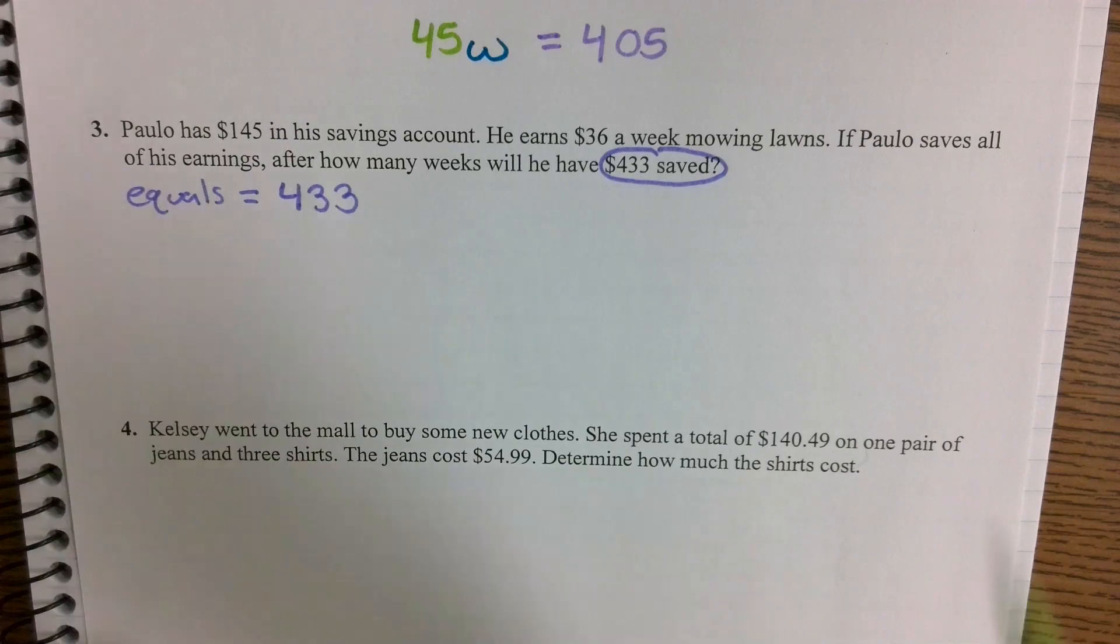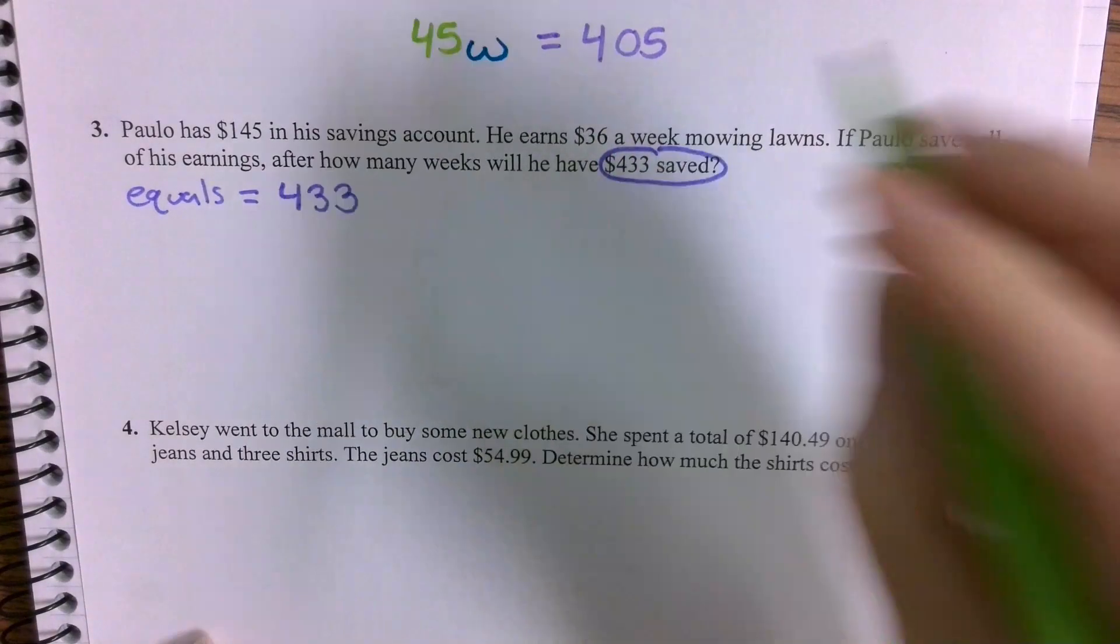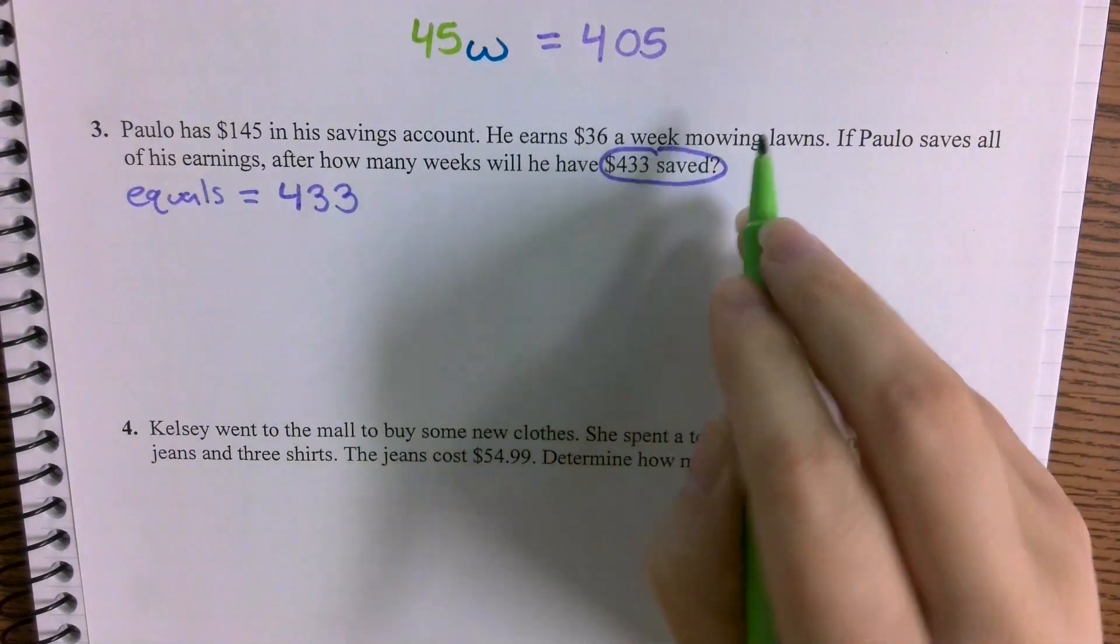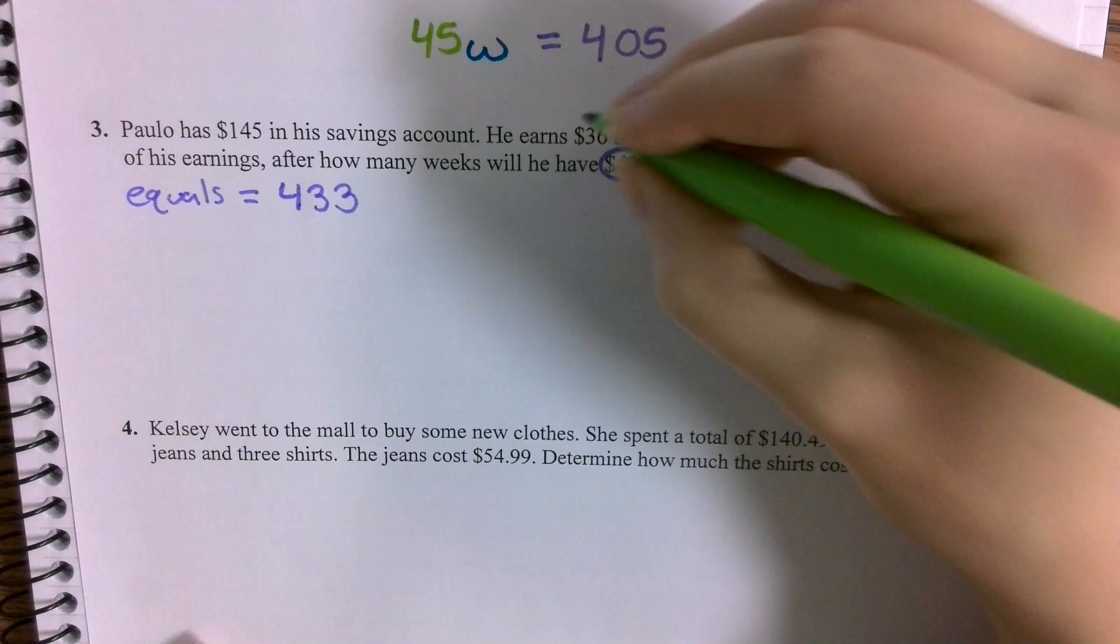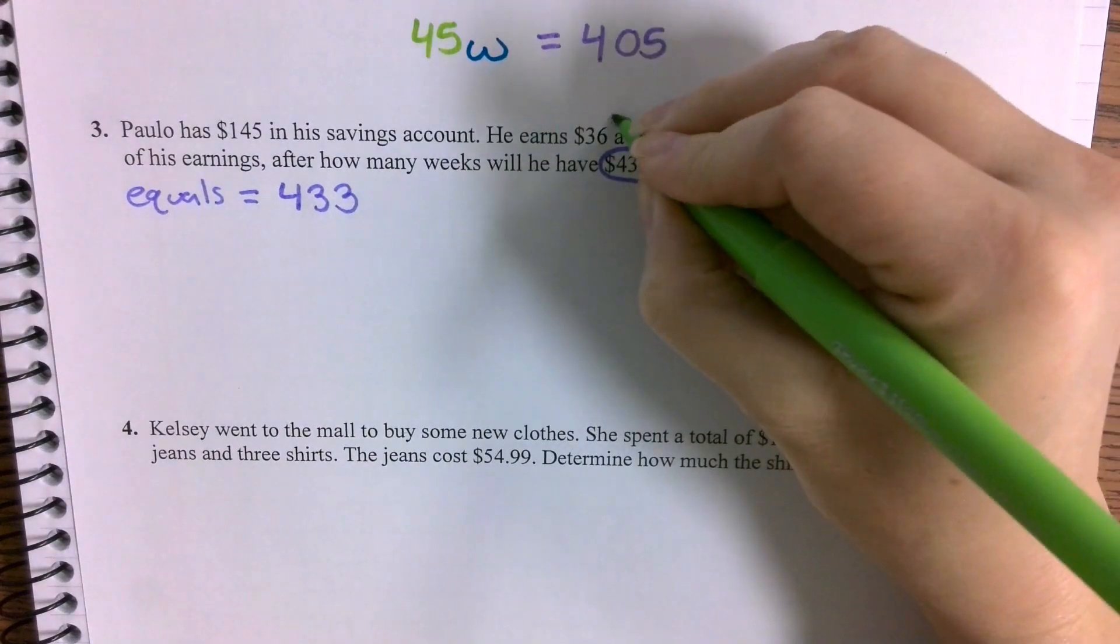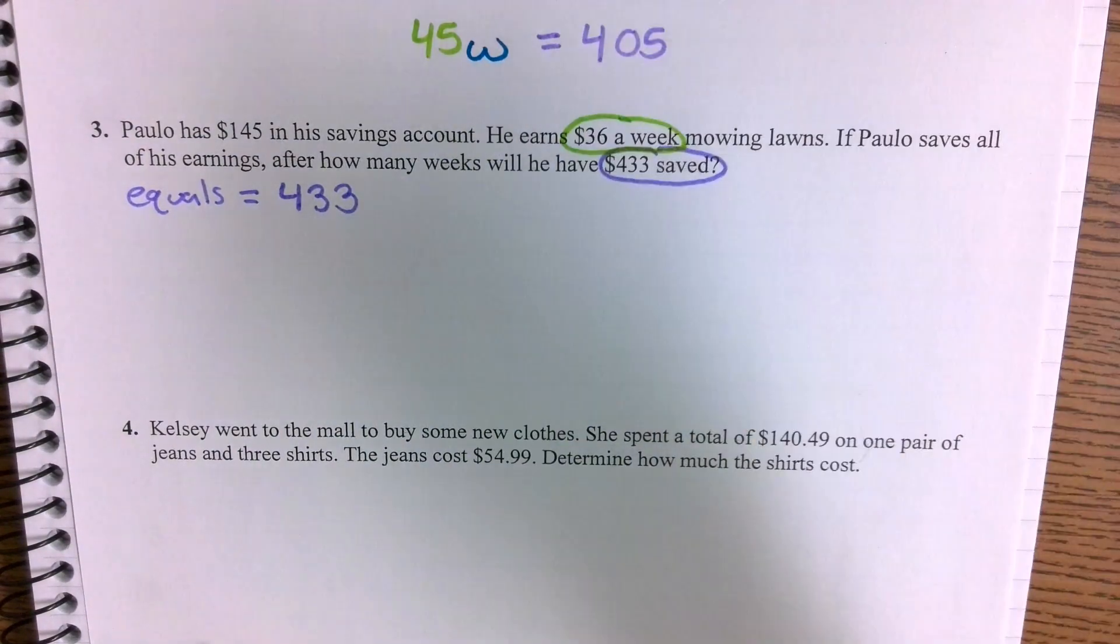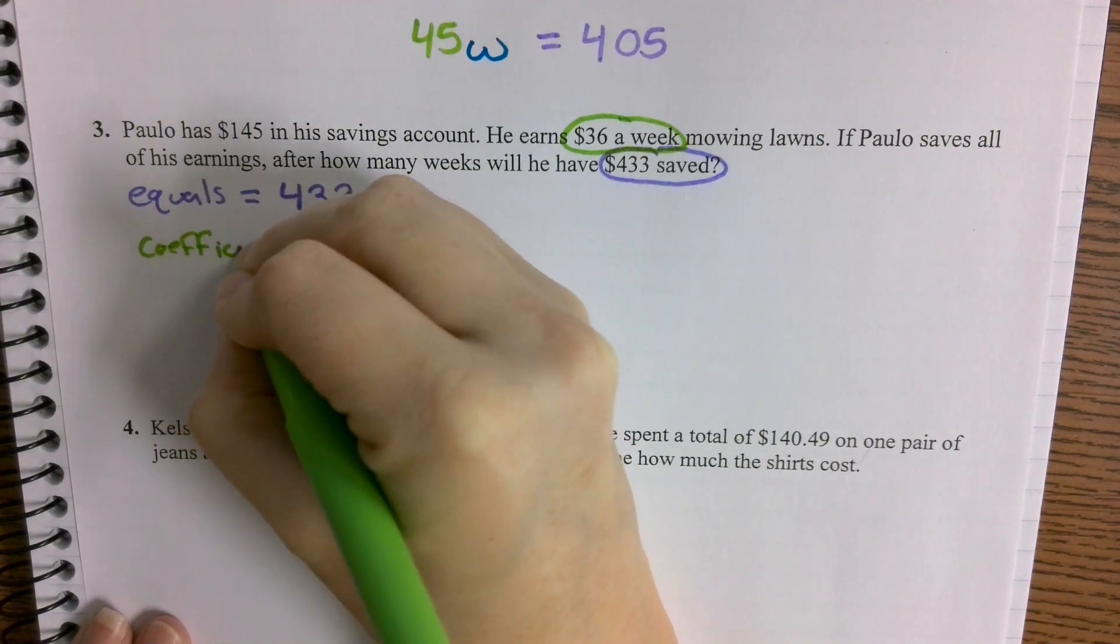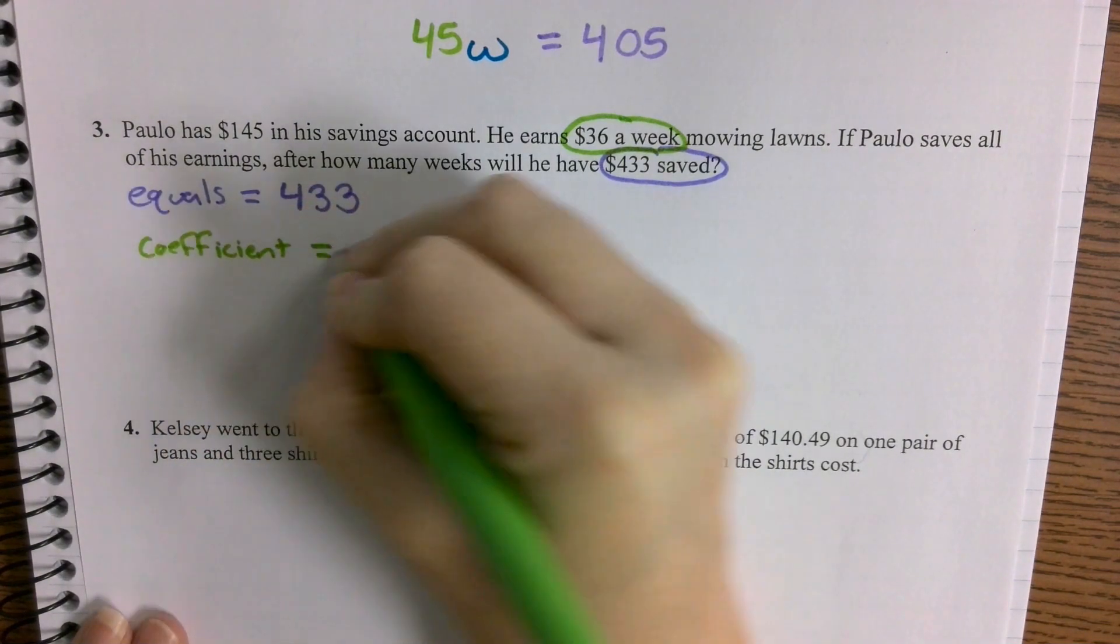$36, right? $36 a week is another way we could say $36 per week or $36 each week or $36 every week, right? We could say per week here. So $36 a week, that's going to be our coefficient. So our coefficient is going to be the $36.